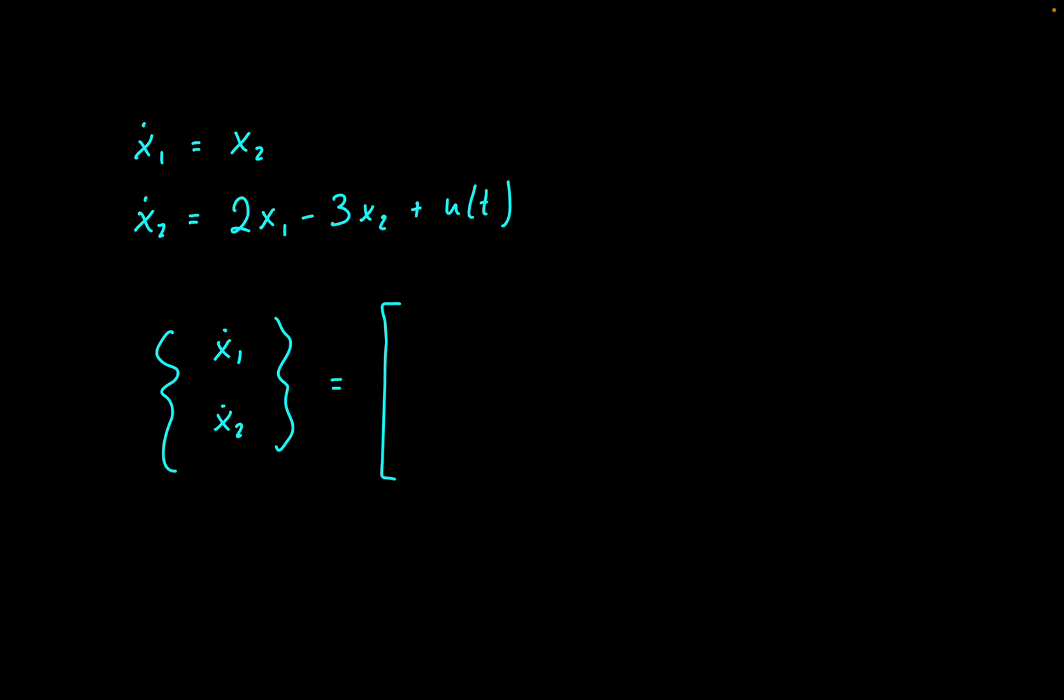So for the first spot, that will be with our x1. So do we have any x1s in our first equation for x1 dot? And that would be no. But in this case, we do have an x2. So then we'll put a 1 right there. We're basically taking, you can imagine, the coefficients from our two equations.